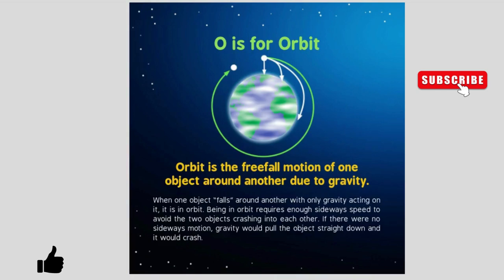O is for orbit. Orbit is the freefall motion of one object around another due to gravity. When one object falls around another with only gravity acting on it, it is in orbit. Being in orbit requires enough sideways speed to avoid the two objects crashing into each other. If there were no sideways motion, gravity would pull the object straight down and it would crash.